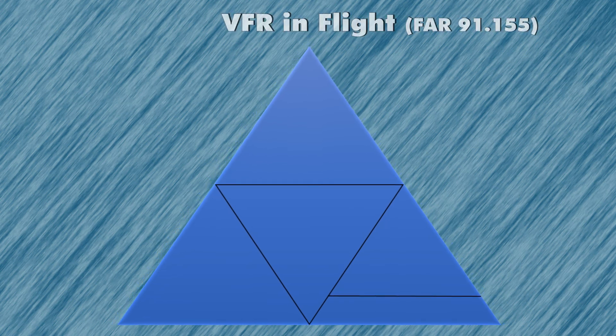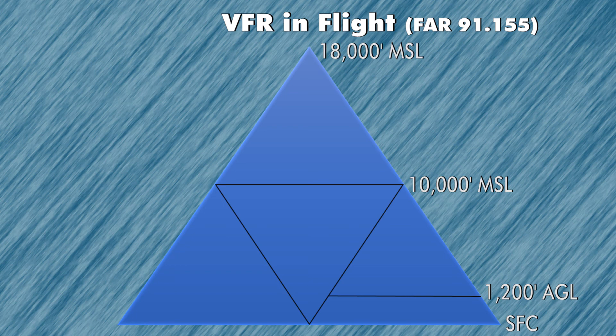Our magic triangle depicts airspace in kind of a 3D way. The bottom of the triangle is the surface, and then the first line is 1,200 feet AGL, the next line is 10,000 feet MSL, and the very top of the triangle is 18,000 feet MSL.